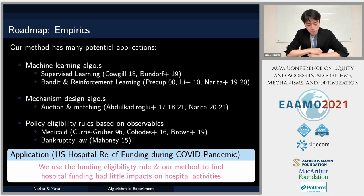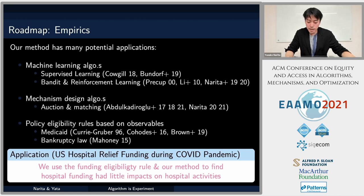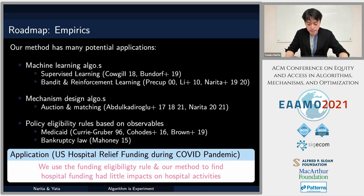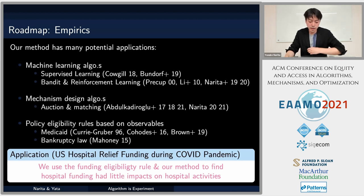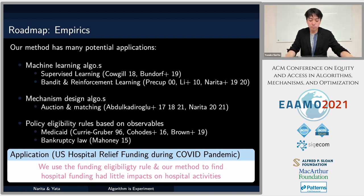In the spirit of policy eligibility rules, we provide an original empirical application to evaluate hospital relief funding distributed by the U.S. government during the COVID-19 pandemic. This policy domain used algorithmic rules to determine whether each hospital is eligible for funding or not. We apply our method to evaluate whether hospital funding had any impacts on hospital activities related to COVID-19. Our empirical bottom line is that this funding policy appears to have had no impacts on any hospital activity related to COVID-19.